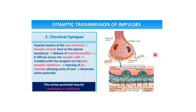Once the impulse reaches the axon terminal, the synaptic vesicles bind on the plasma membrane and release the neurotransmitter. This neurotransmitter diffuses across the synaptic cleft and combines with the receptor on the post-synaptic membrane. Opening of ion channels will occur, allowing entry of ions and generating the action potential. This may be excitatory or inhibitory.